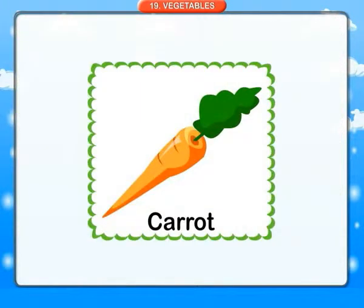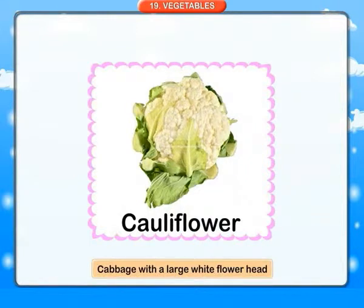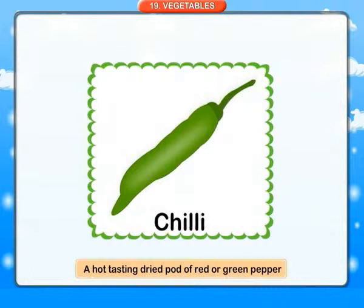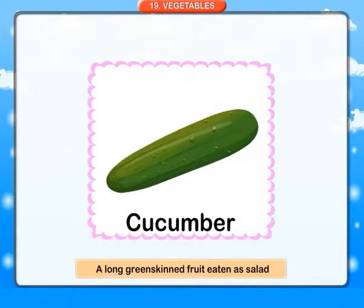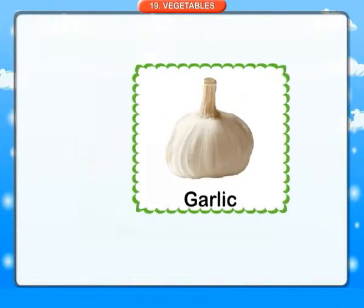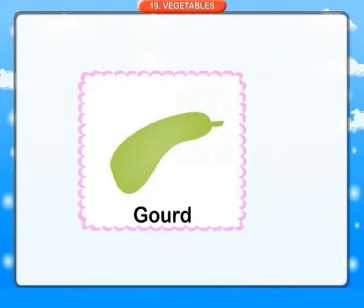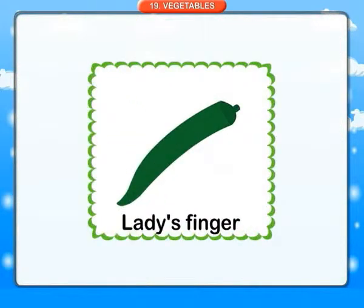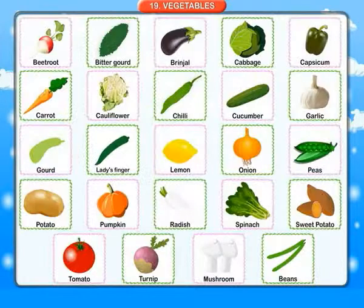Carrot: a tapering orange root vegetable. Cauliflower: a cabbage with a large white flower head. Chilli: a hot-tasting dried pod of red or green pepper. Cucumber: a long green-skinned fruit eaten as salad. Garlic: a plant of the onion family. Gourd: a hard-skinned fleshy fruit of a climbing plant. Lady finger: a tropical plant with green seed pods eaten as a vegetable.